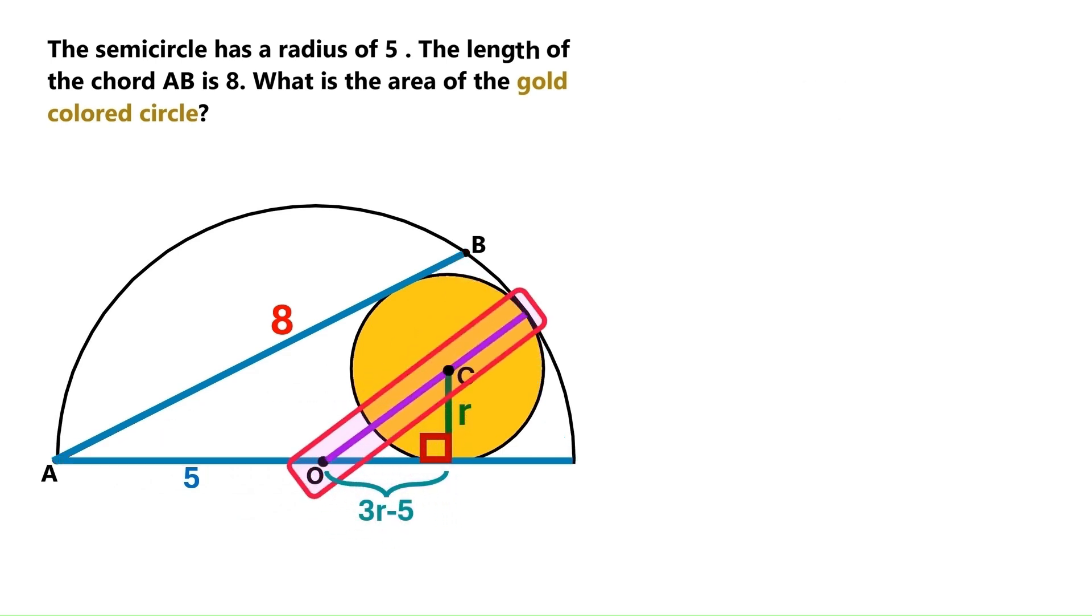Now let's draw a radius for the big semicircle here, and we know it's 5. And we also know that this segment has to be r, because it's the radius of the gold circle. That means this remaining distance down here is 5 minus r.